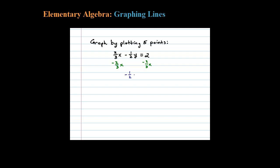That leaves me with negative one-half Y equals negative two-thirds X plus 2. The reciprocal of negative one-half is negative two, so I'm going to multiply both sides by negative two. Negative two times negative one-half is one Y.